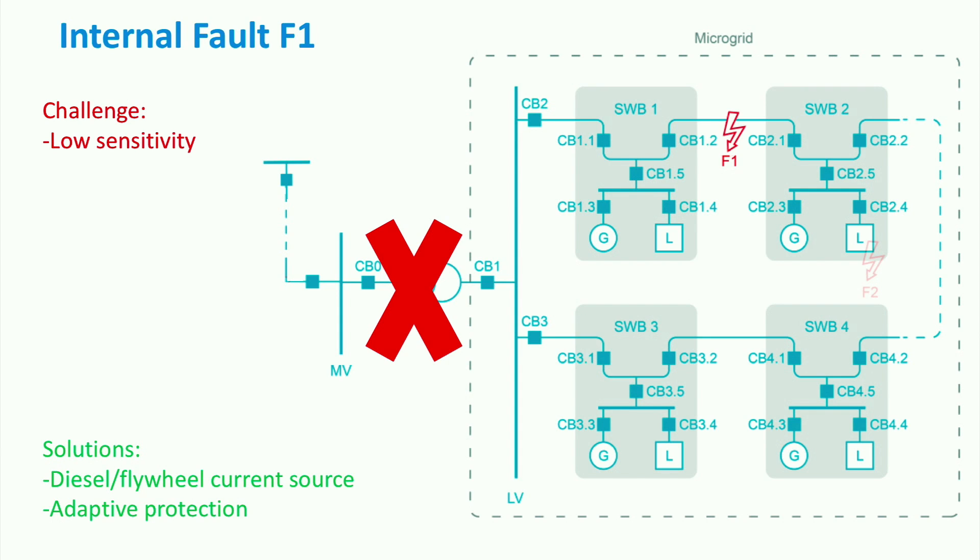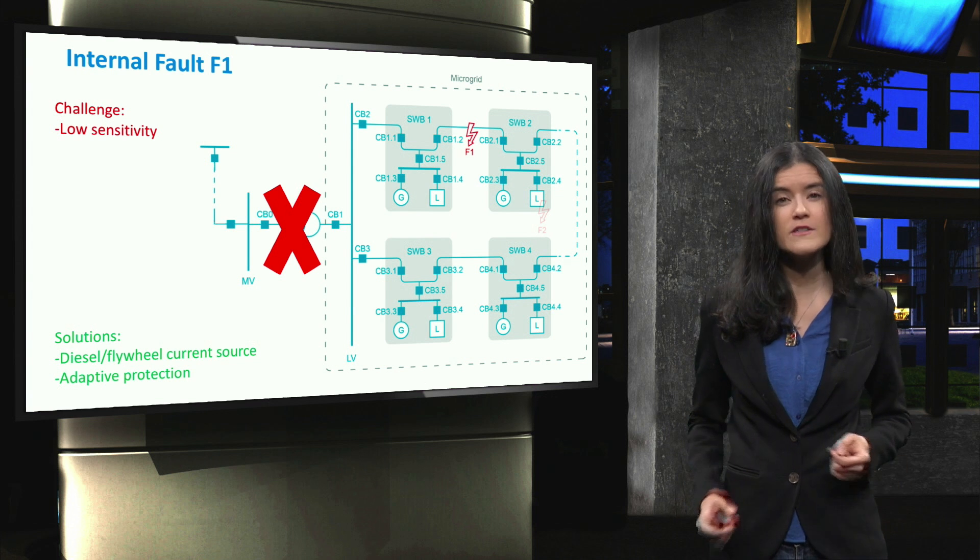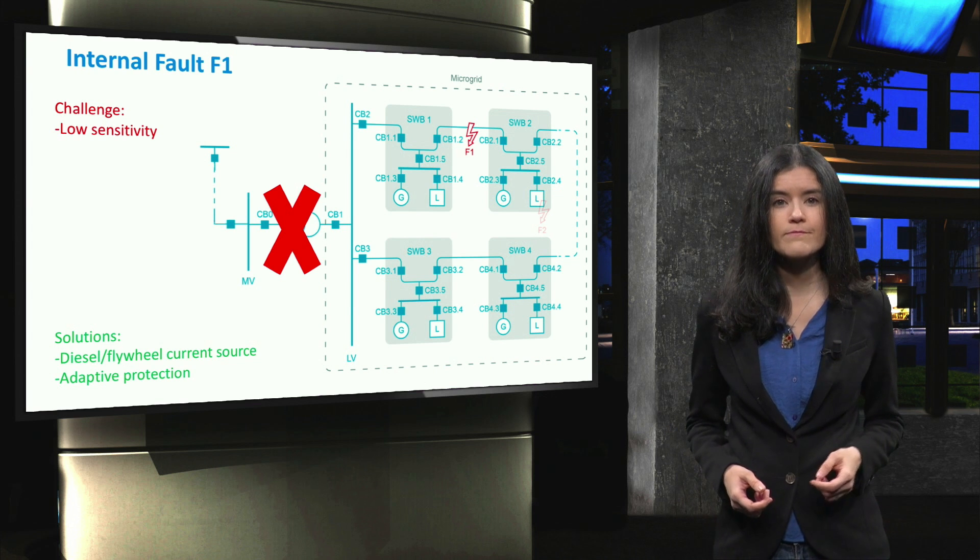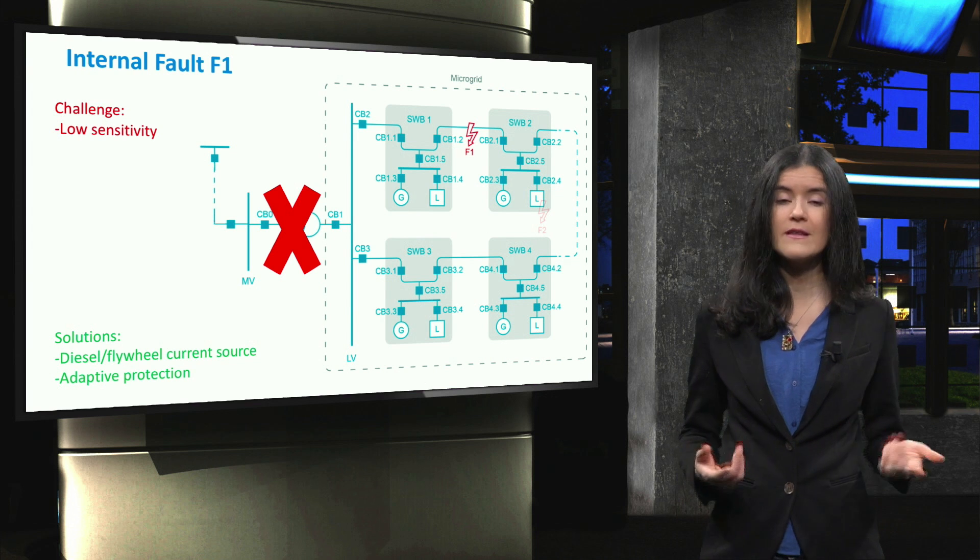The second solution is to implement an adaptive microgrid protection, where the microgrid control system continuously analyzes the structure of the network and actively adjusts the settings of the overcurrent relays in such a way that the protection scheme properly works for different types of system operation and location of faults. We will elaborate more on adaptive protection in some examples in the next videos.